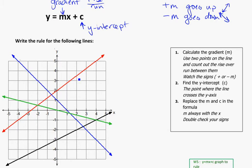Looking at these four lines, I can tell this one and this one are going to be negative gradients. The black and the red will be positive, because the red and the black are both pointing upwards — they're getting bigger as we move along the line. Think about moving along the line from left to right. The blue line goes down the hill, so it's a negative gradient. Same for the green — as you move along, the line gets lower and lower, so it's a negative gradient.